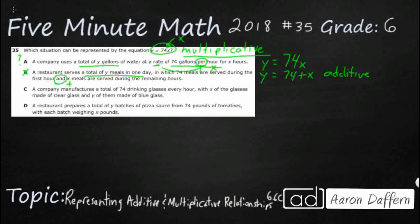A company manufactures a total of 74 drinking glasses every hour. 74 with x glasses made of clear glass and then y made of blue glass. So we're just going to do 74 equals x plus y. This is another additive relationship. And we've got this and right here, letting you know that it's 74 total and you just add the x and the y.